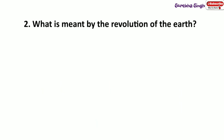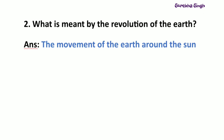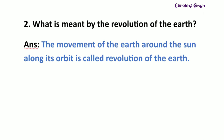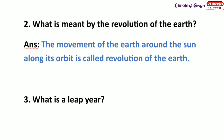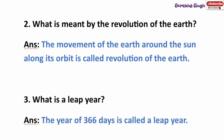Question 2: What is meant by the revolution of the earth? The movement of the earth around the sun along its orbit is called revolution of the earth. Question 3: What is a leap year? The year of 366 days is called a leap year.